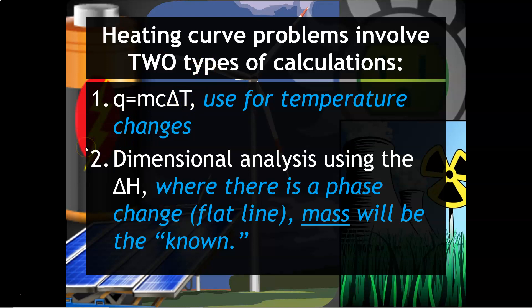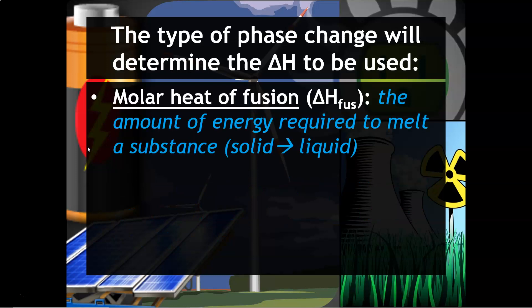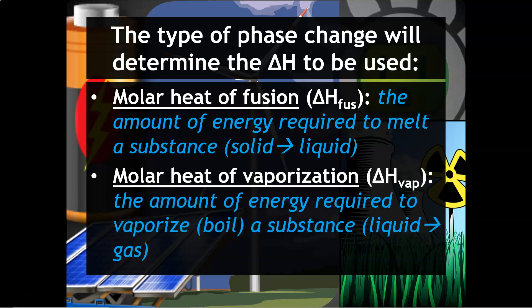Before we move on, let's talk about the types of ΔH values you'll see. The first is the molar heat of fusion — fusion is another name for melting. It is the amount of energy required to melt one mole of a substance. The molar heat of vaporization applies when a substance is boiling — it is the energy required to vaporize or boil a substance, taking it from liquid to gas.